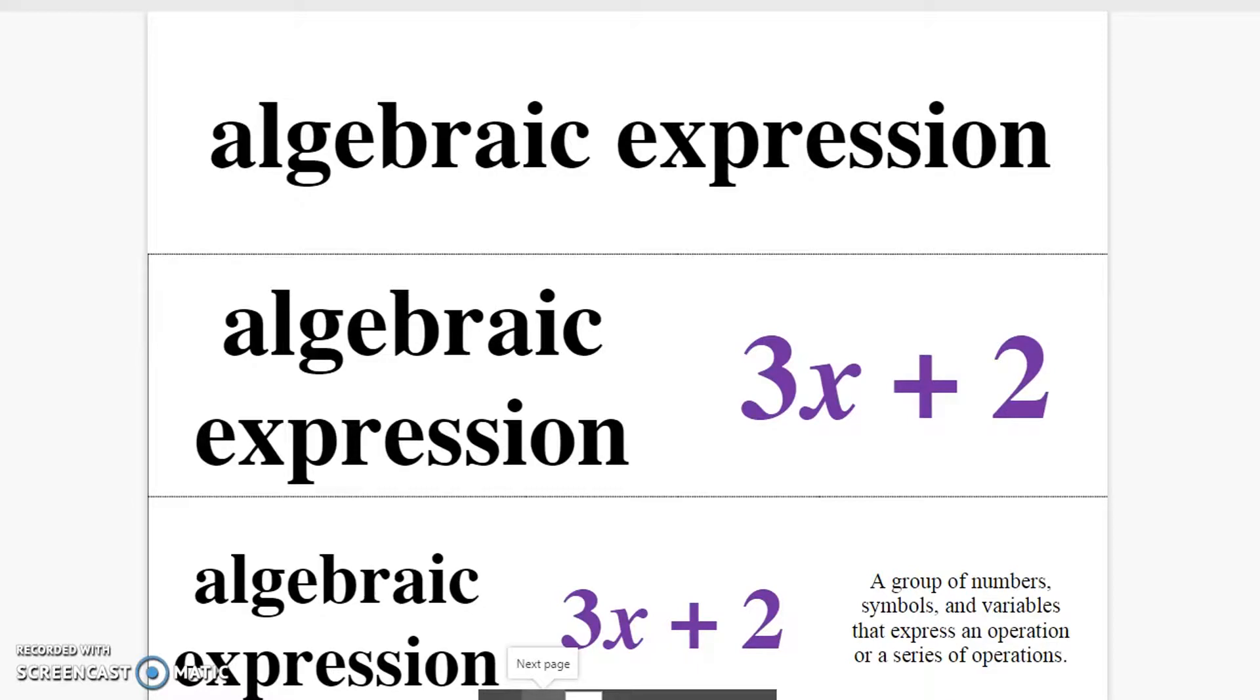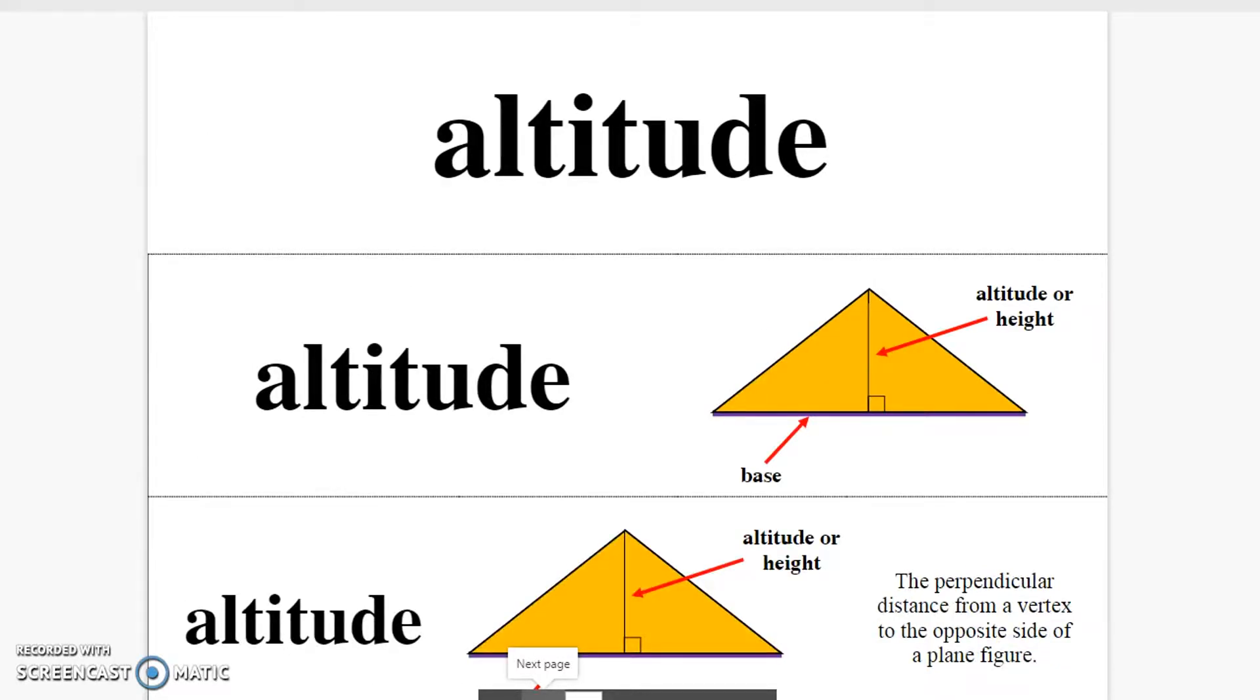Algebraic expression. A group of numbers, symbols, and variables that express an operation or a series of operations. Altitude. The perpendicular distance from a vertex to the opposite side of a plane figure.